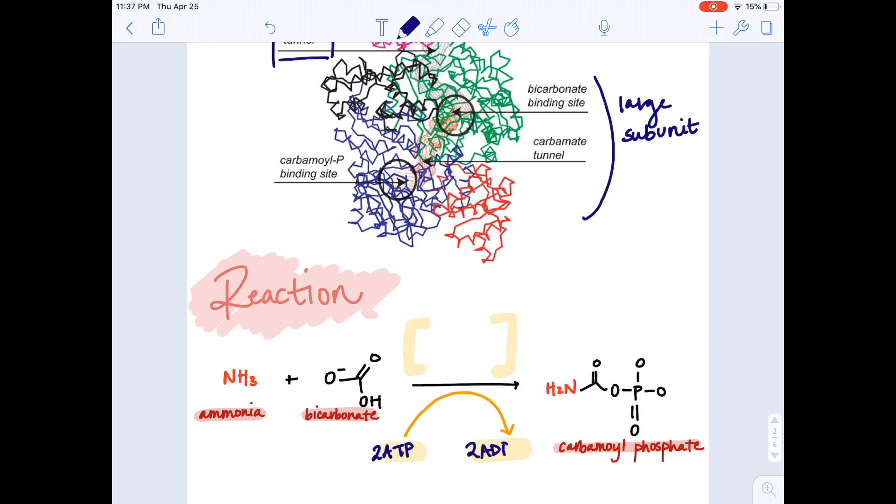Carbamoyl phosphate synthetase is an irreversible enzyme and has three main steps in its reaction mechanism. In order to create carboxyl phosphate, a bicarbonate ion is phosphorylated with ATP. Carbamic acid is formed after the carboxyl phosphate reacts with ammonia, and inorganic phosphate is released.